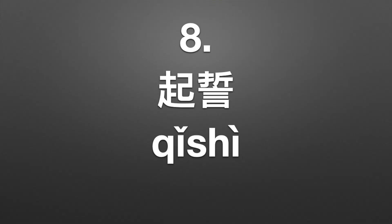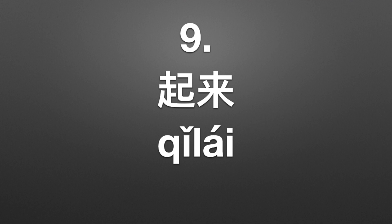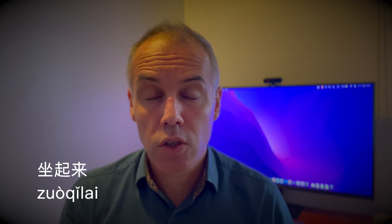At number eight on our list, we've got 起誓. 誓 means a pledge, a vow, or an oath. So if you 起誓, then you make an oath, or you vow or swear to do something. At number nine, we've got a very common one that on its own doesn't mean very much: 起来. 来 is the word for come, and 起来 gets added to the end of other verbs. So you could say 拿起来 — to pick up; 坐起来 — to sit up. It's also added to words like 看, so 看起来 means it looks like or it appears like.